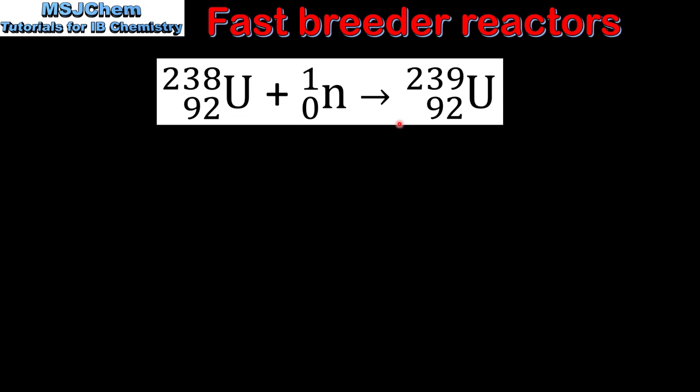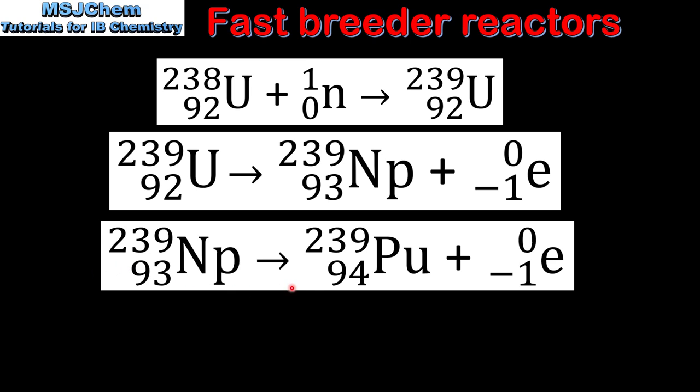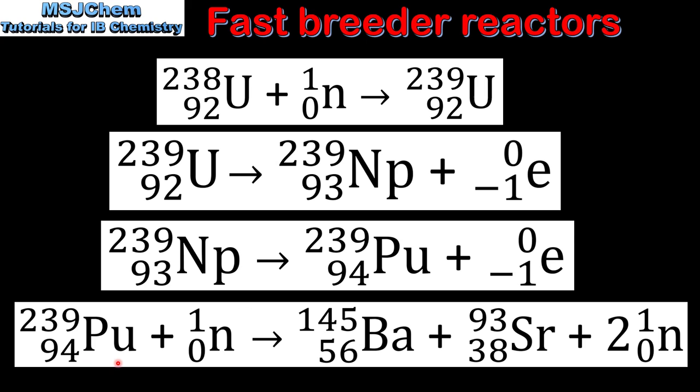Next, the uranium-239 undergoes beta-minus decay to form neptunium-239. Next, neptunium-239 also undergoes beta-minus decay to form plutonium-239. And finally, the plutonium-239 is bombarded by neutrons and undergoes nuclear fission.